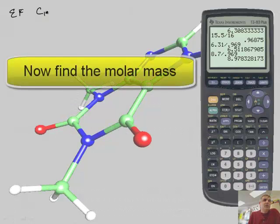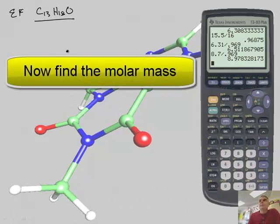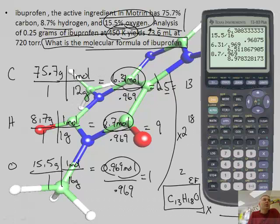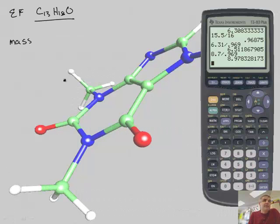If I have an empirical formula of C13H18O, I want to find the molecular weight using the data from the previous problem. We know the mass. You should copy this down. We have 0.25 grams of the substance. I'm going to divide that by so many moles.